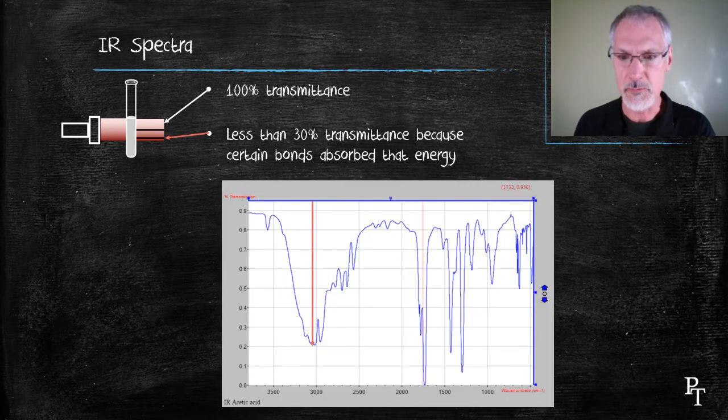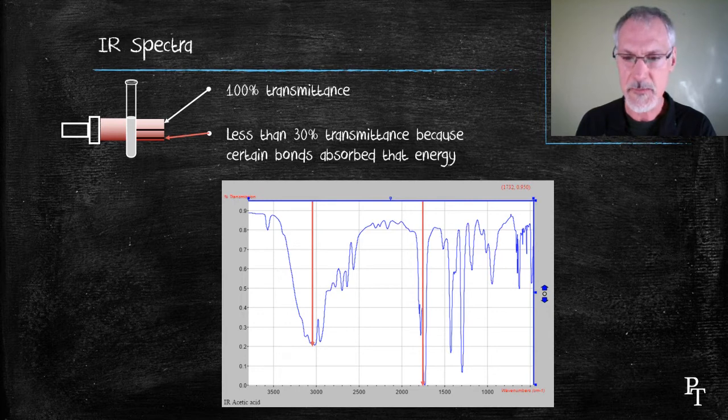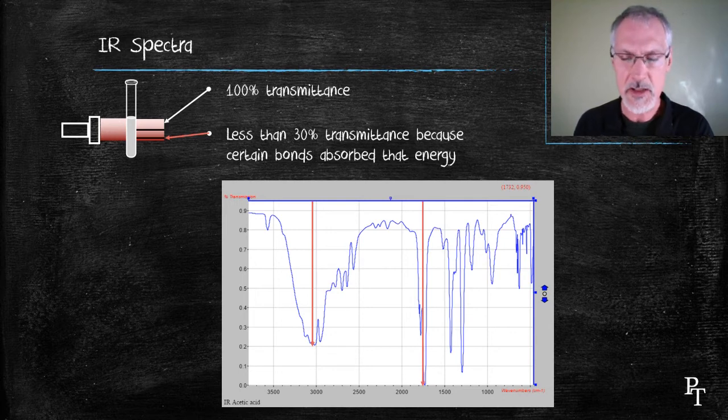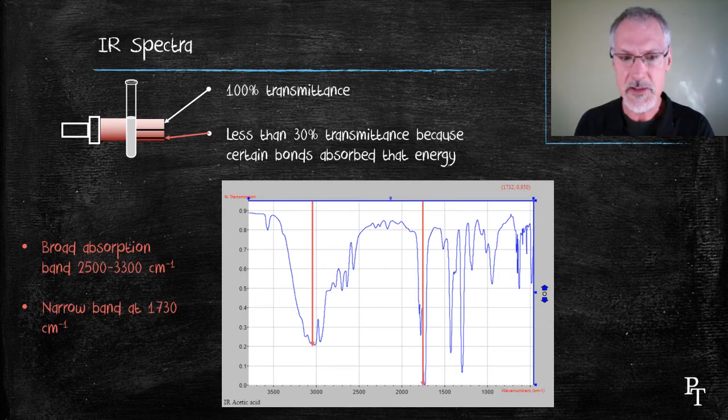This would appear in a trace shown below where the wave number corresponds to the various energies of light. What we're particularly interested in are the large valleys, places where energy is absorbed. And I've marked two of them here on this graph. So I'll write those off to the side here. We have a broad band between about 2,500 and 3,300 and another narrow band at about 1,700.